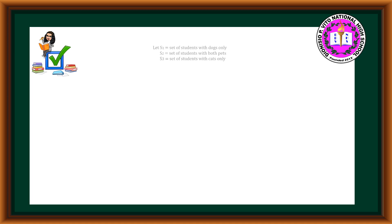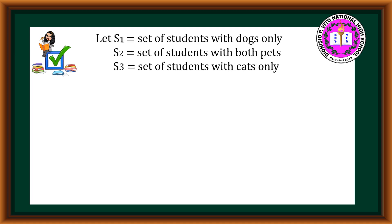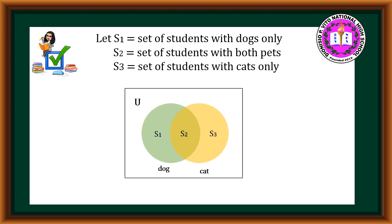For the solution, let S₁ be the set of students with dogs only, S₂ be the set of students with both pets, and S₃ be the set of students with cats only. We have a Venn Diagram showing the set of students with dogs only, cats only, and both pets at the intersection.